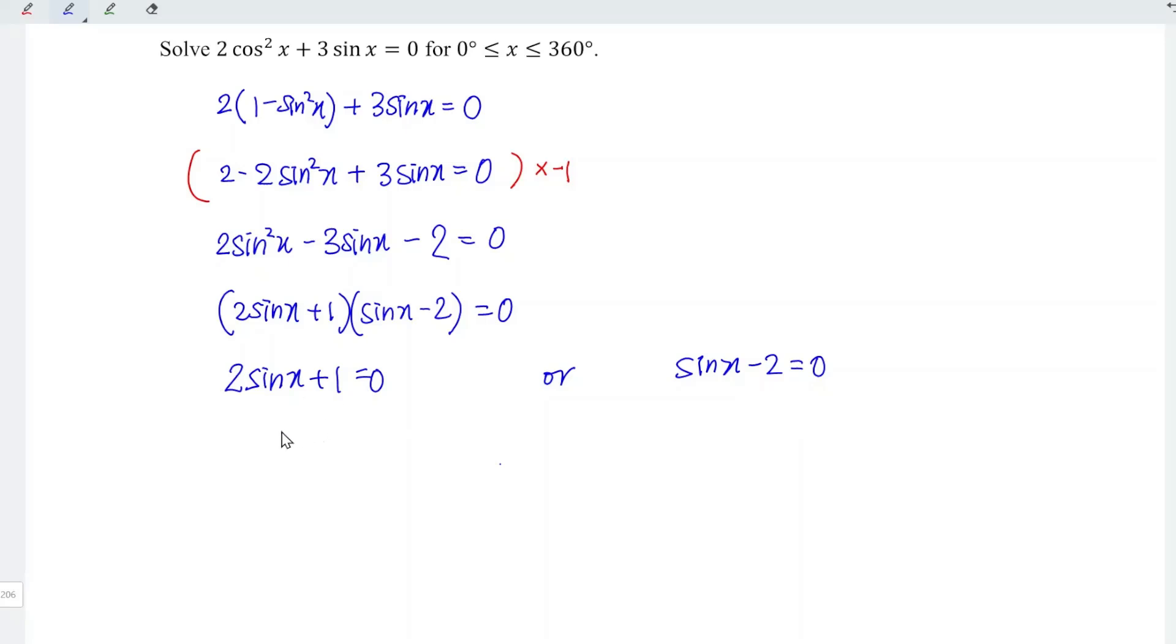For the first equation, we have sine x is equal to negative 1 over 2, and for the second, sine x equals 2.